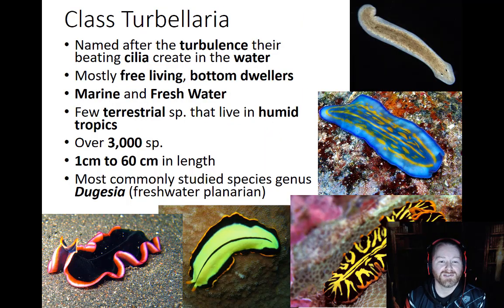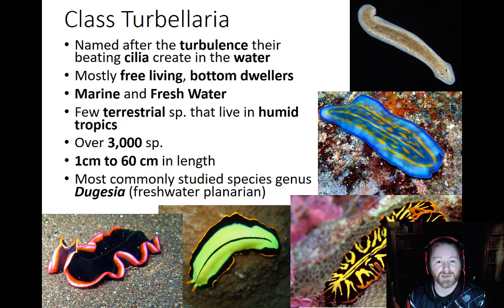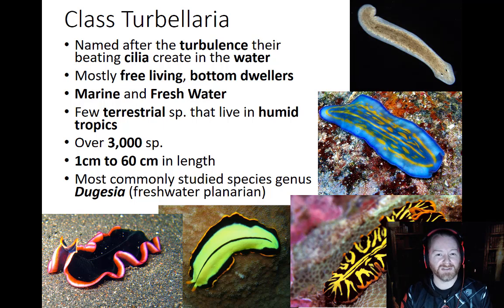Class Turbellaria are our free-living flatworms, found in both marine and freshwater environments. They are named Turbellaria because they have little cilia on their sides that help push them through the water and cause turbulence. Marine flatworms specifically undulate through the water as they move — they almost look like flying carpets.